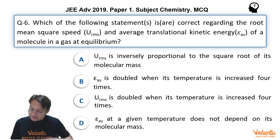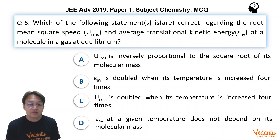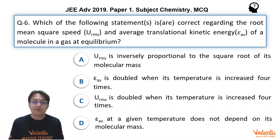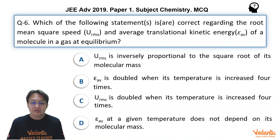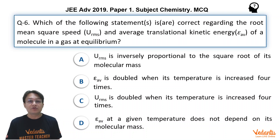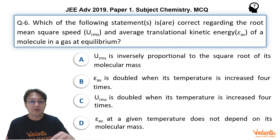Which of the following statements is correct regarding the root mean square speed and average translational kinetic energy E-average of a molecule in a gas at equilibrium? Four options are given: URMS is inversely proportional to the square root of the molecular mass; E-average is doubled when the temperature is increased four times; URMS is doubled when the temperature is increased four times; and E-average at a given temperature does not depend on its molecular mass.